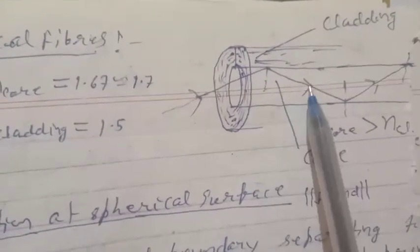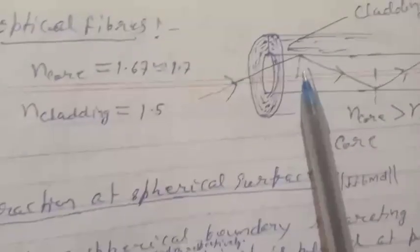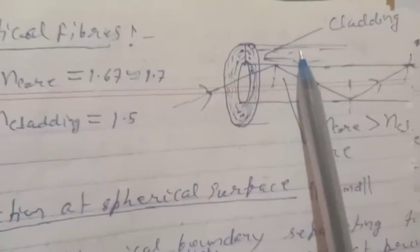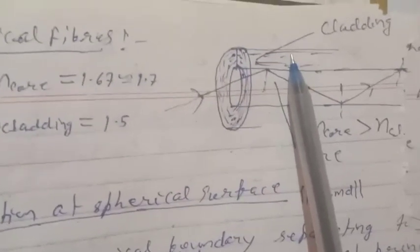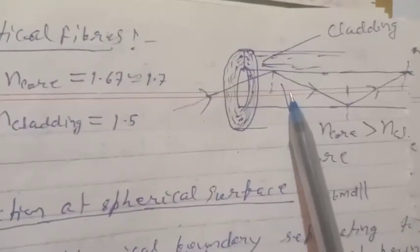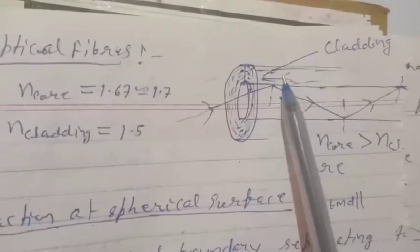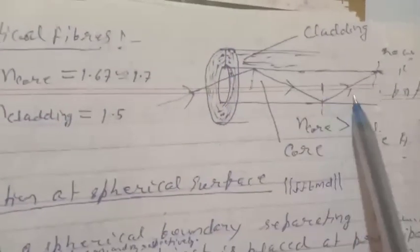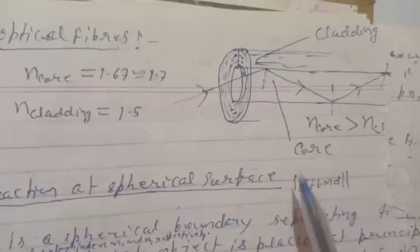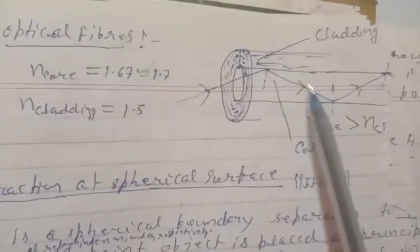Optical fiber is also based on total internal reflection. An optical fiber has a denser medium called the core and an outer layer called the cladding. The refractive index of the cladding is less than the refractive index of the core — that is, the core is denser and the cladding is rarer. So total internal reflection takes place and light travels from one point to another. This is used in telecommunication and is called optical fiber.